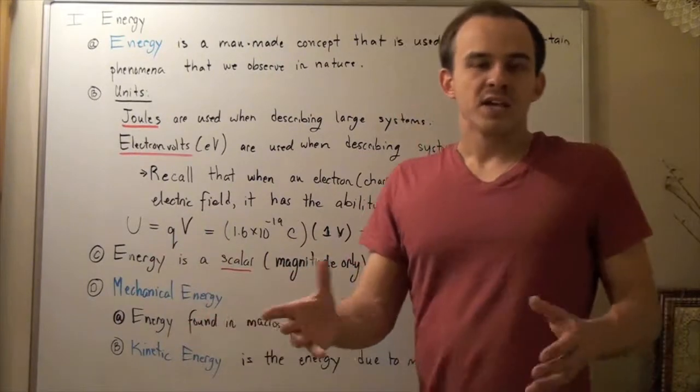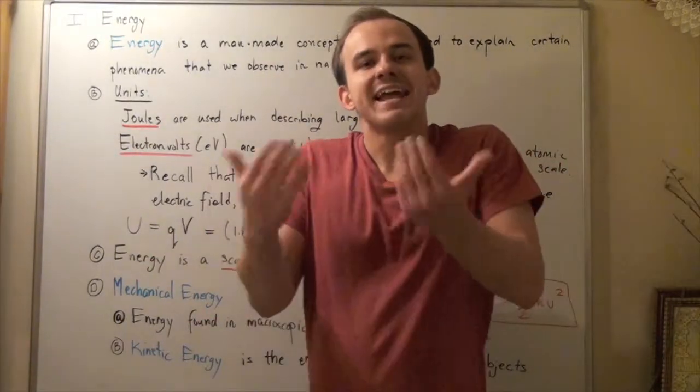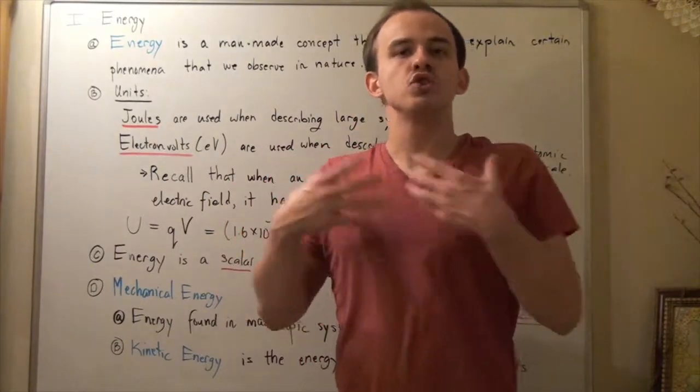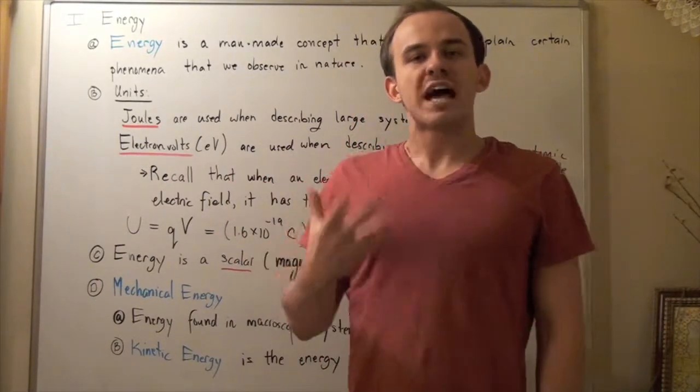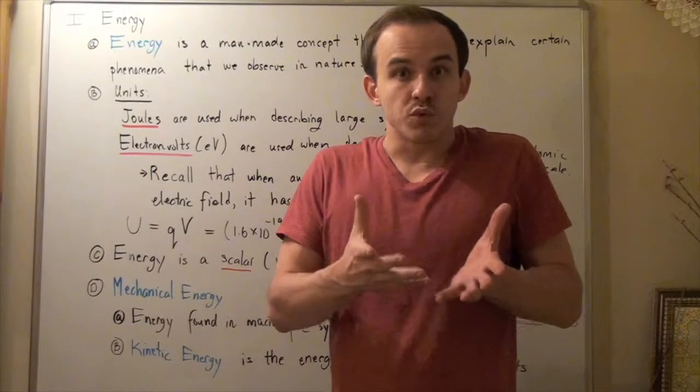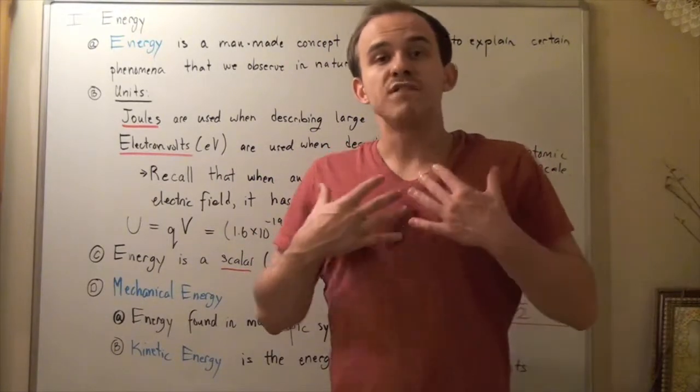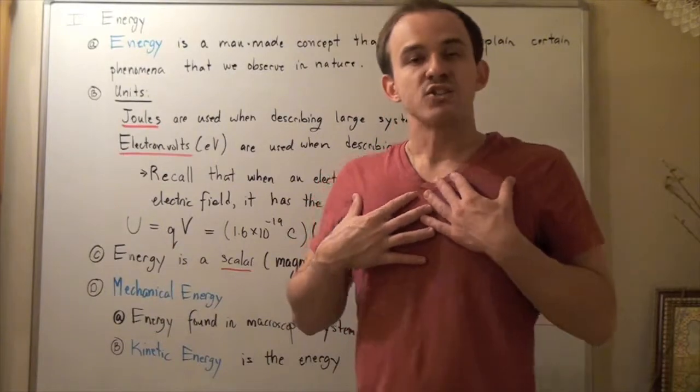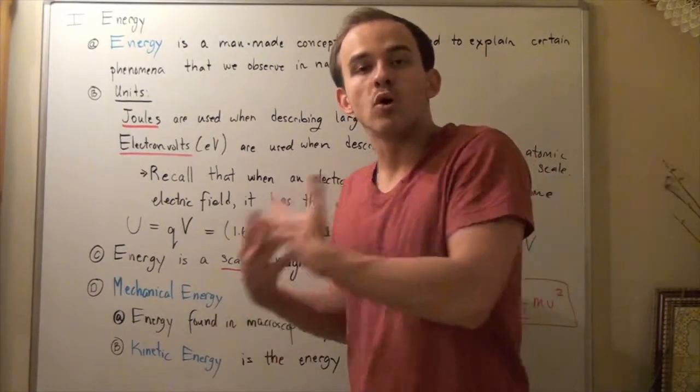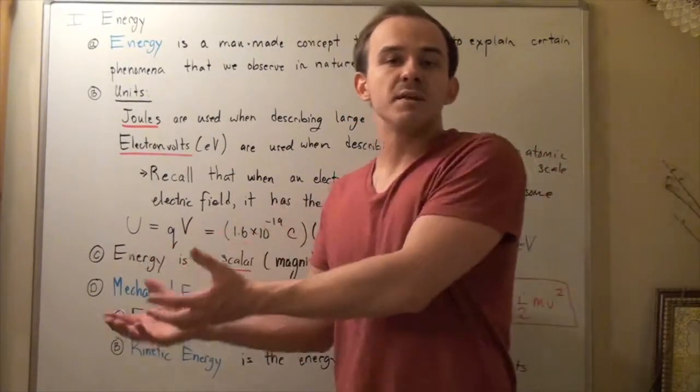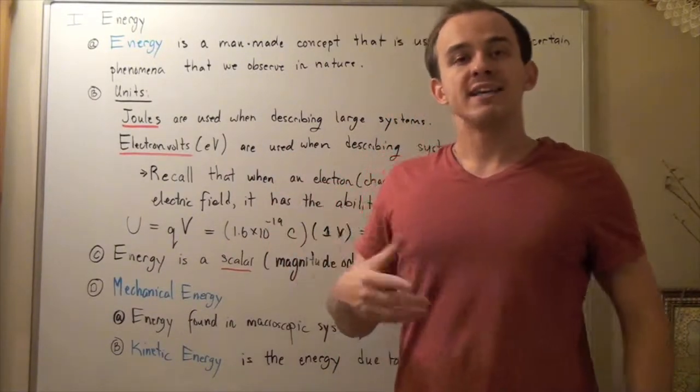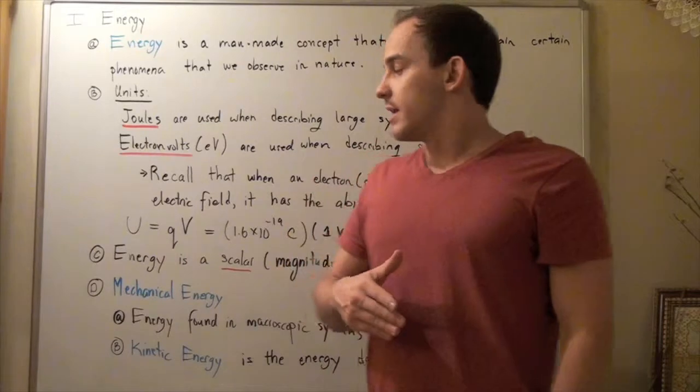Now, sometimes people say an object or a system gained energy with a plus. And sometimes we say energy was lost with a minus. Well, that simply means if energy was gained or lost. So, if I'm the object and I push somebody, I lost energy. So, my energy is negative. I lost energy. Likewise, if somebody pushes me, me, the object, gained energy. So, I get energy with a plus sign.